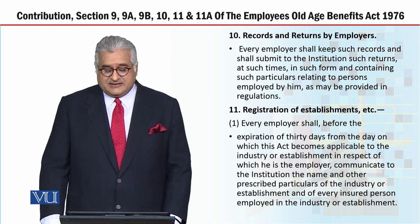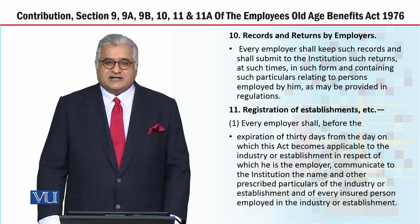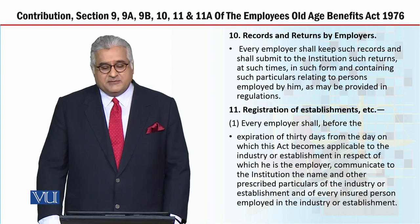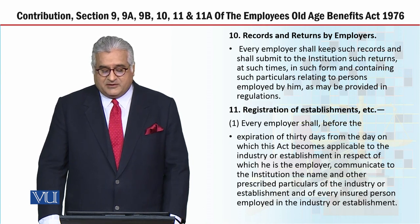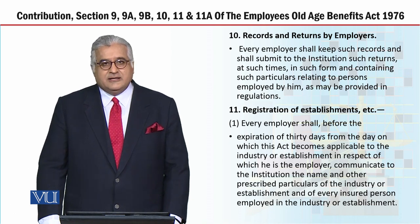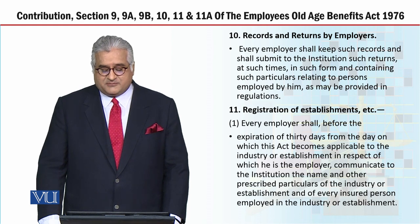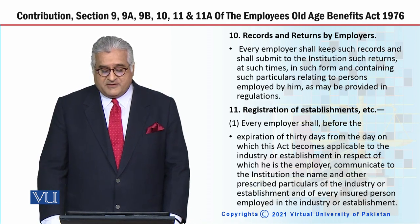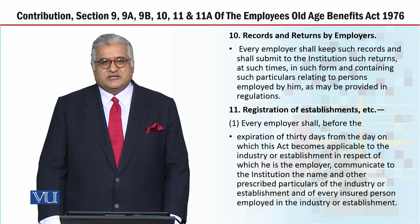Now let's move on to Section 11 — Registration of Establishments. Jo Employees Old Age Benefits Act hai, is ke tait jo establishments hain, unhone apne aap ko register is institution ke paas karwana hai. Every employer shall, before the expiration of 30 days from the day on which this act becomes applicable to the industry or establishment, communicate to the institution the name and other prescribed particulars of the industry or establishment and of every insured person employed therein. Hope you have understood the topic. Thank you very much indeed.